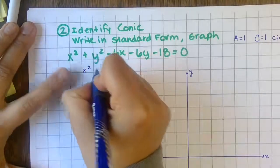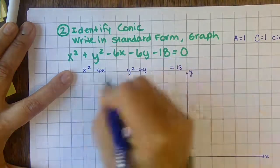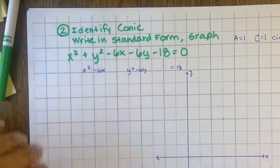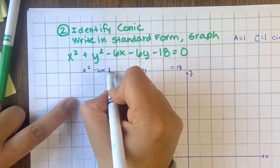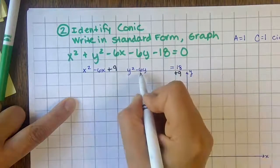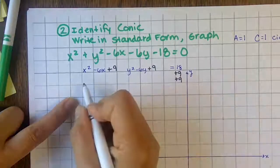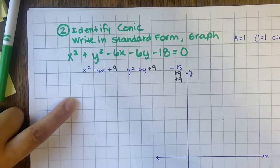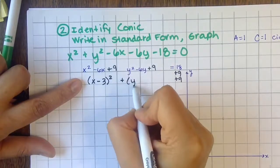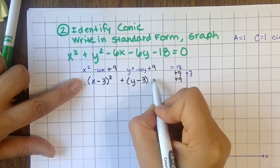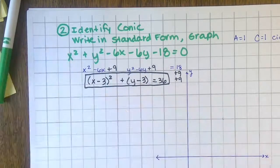Get your x's together and y's together, move the constant to the other side and leave space for completing the square. Half your middle term squared: half of negative six is negative three, negative three squared is nine — add nine to both sides. Do the same for y: half of negative six is negative three, squared is nine — add nine to both sides. Rewrite as a perfect square: x minus three squared plus y minus three squared.